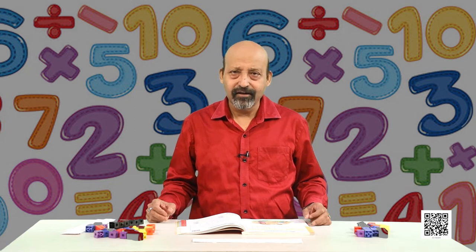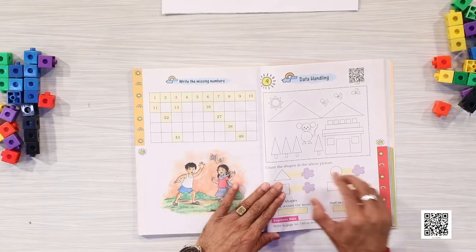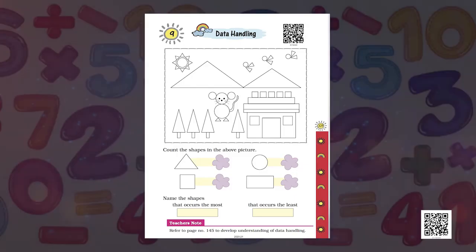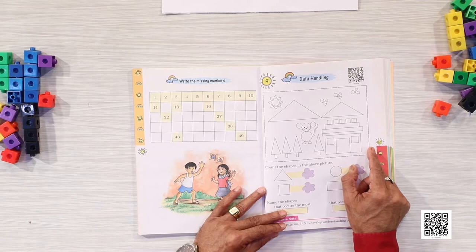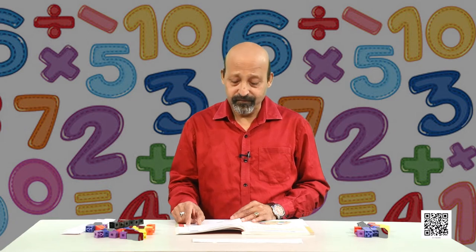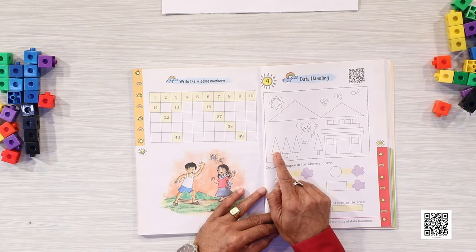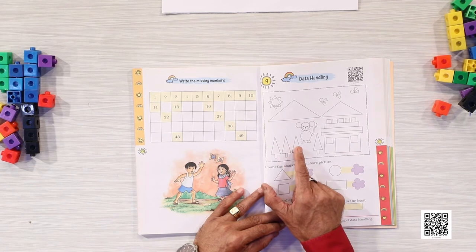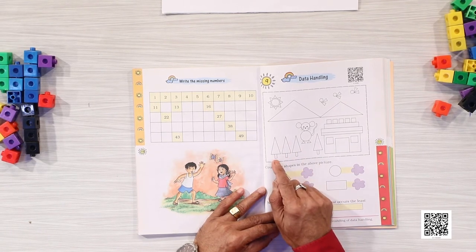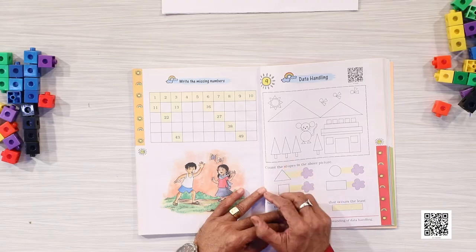Let us now start with this picture. The picture has a lot of shapes here. You can see this picture on your screen and all these shapes are known to you. Many of you may also know the name of the shape. Do you know what is the name of this shape? Its name is triangle, and this one is again triangle. What is the name of this shape? It is rectangle, and so on.